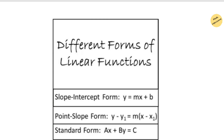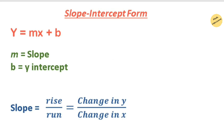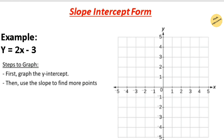The first form is the slope-intercept form, with the formula y equals mx plus b, where m is the slope and b is the y-intercept. The y-intercept is the point where the line intersects the y-axis on a graph. To find the slope, we use the formula: change in y-axis over change in x-axis — that is, how many units y moved vertically divided by how many units x moved horizontally.